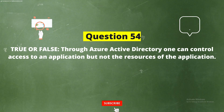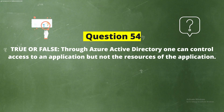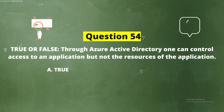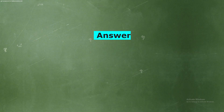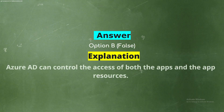Question 54: True or false — through Azure Active Directory, one can control access to an application but not the resources of the application. The correct answer is Option B, False. Explanation: Azure AD can control the access of both the apps and the app resources.